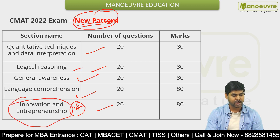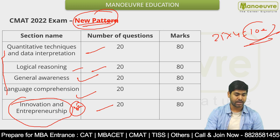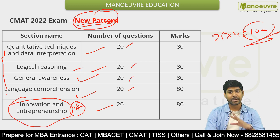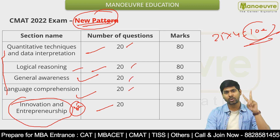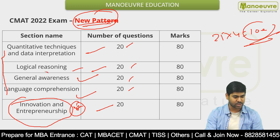The old four sections had 25 questions each — 100 marks total — but now they have reduced the section-wise count as well. So as I mentioned earlier, two sections are your game changers: one is GK and the other is Innovation and Entrepreneurship.